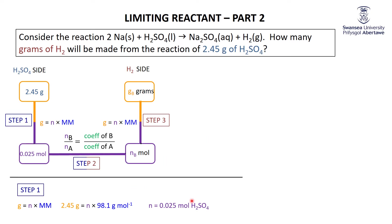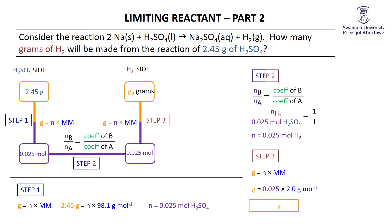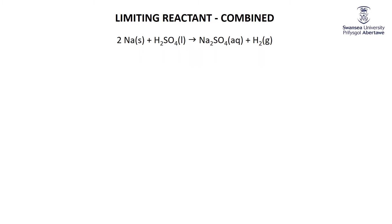Step two: moles of H2SO4 to moles of H2. The coefficient of H2 is 1 and the coefficient of H2SO4 is 1, so we get 0.025 moles of H2. Step three: converting moles to grams — 0.025 times 2 gives us 0.05 grams of H2.